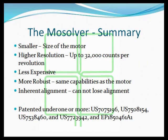In summary, the Mosolver is an integrated actuator with feedback. Its size is the same as the size of the motor with no additional volume for the feedback device. It has a high resolution of 32,000 counts per revolution. It is less expensive and more robust, and the alignment is inherent to the design. It is covered under multiple U.S. patents and a pan-European patent.